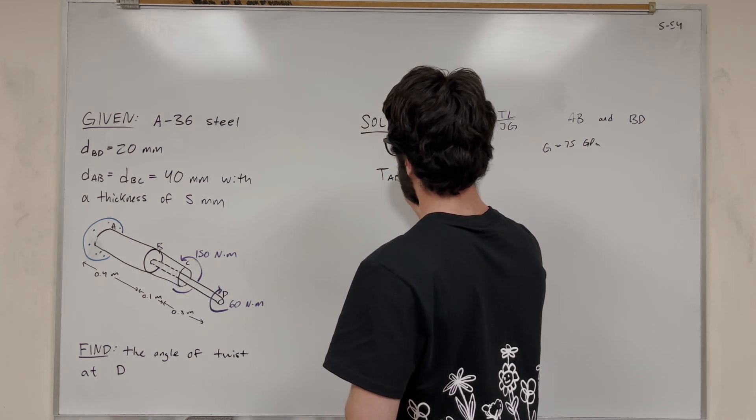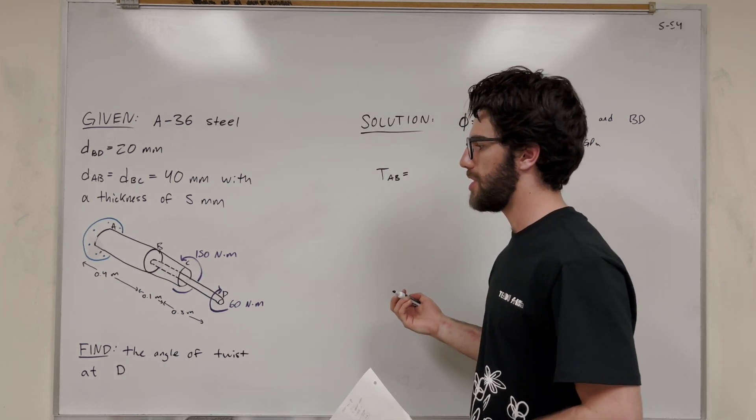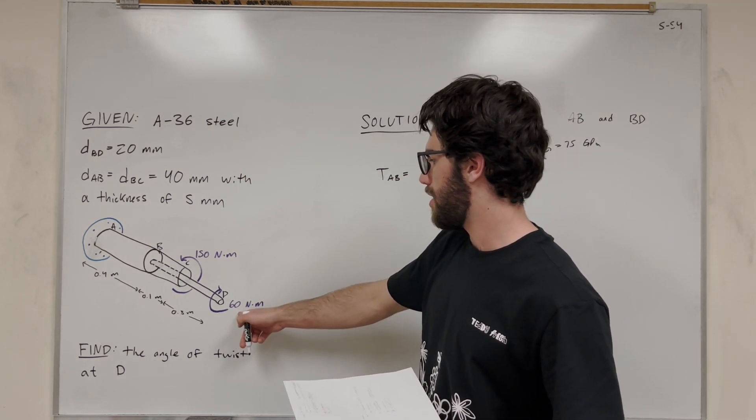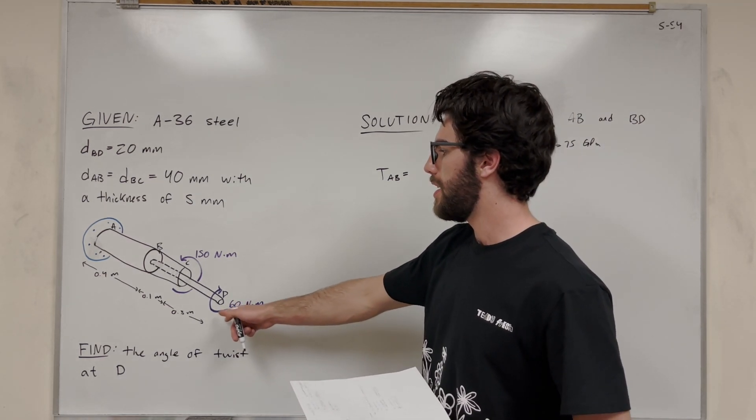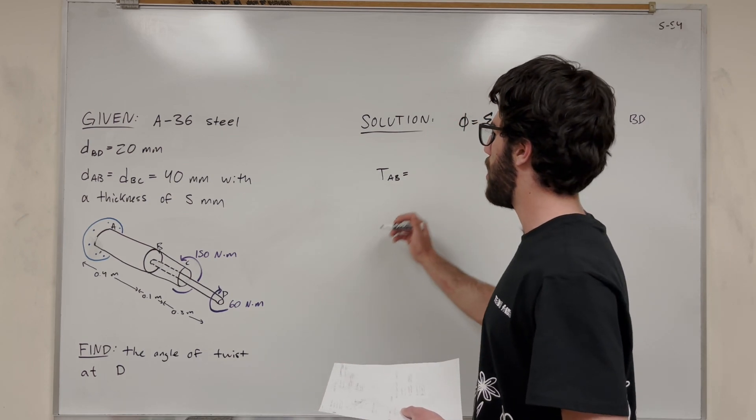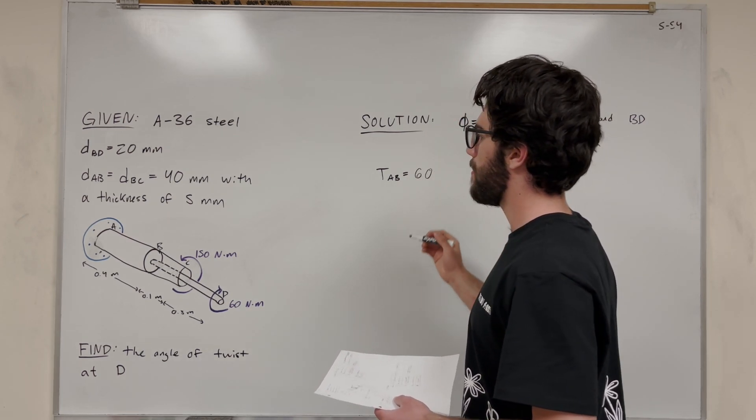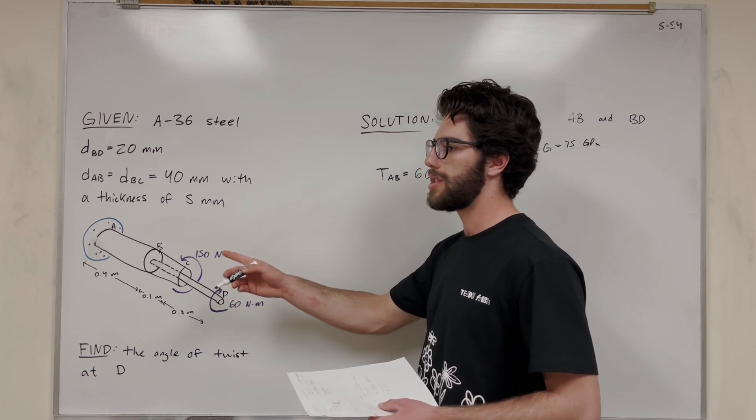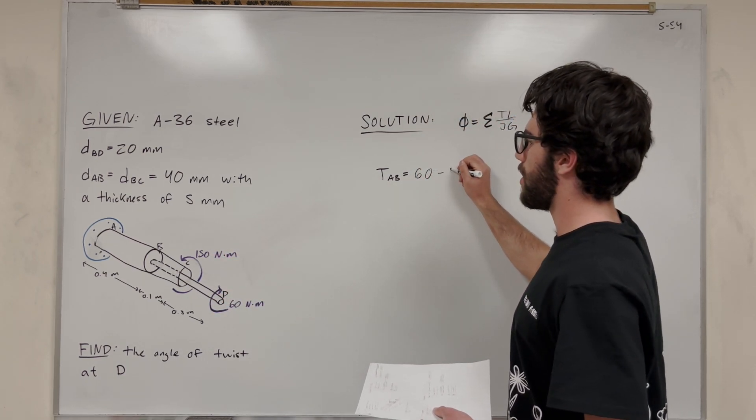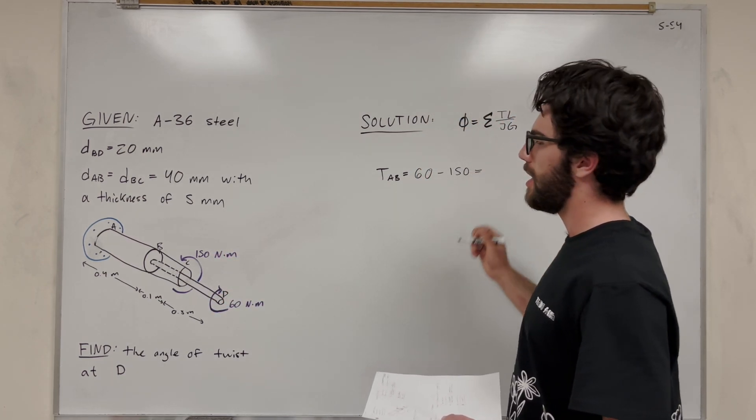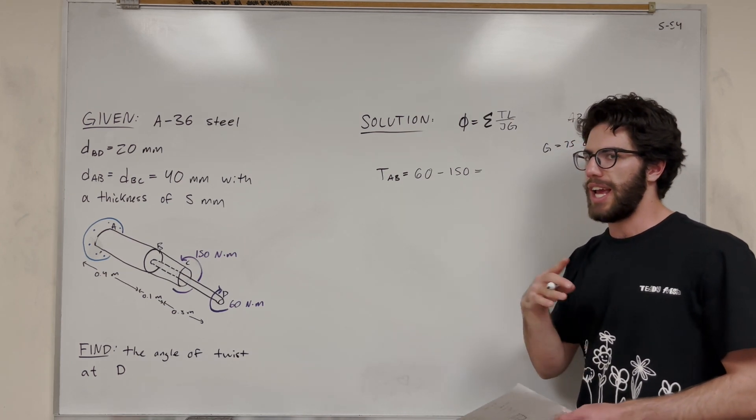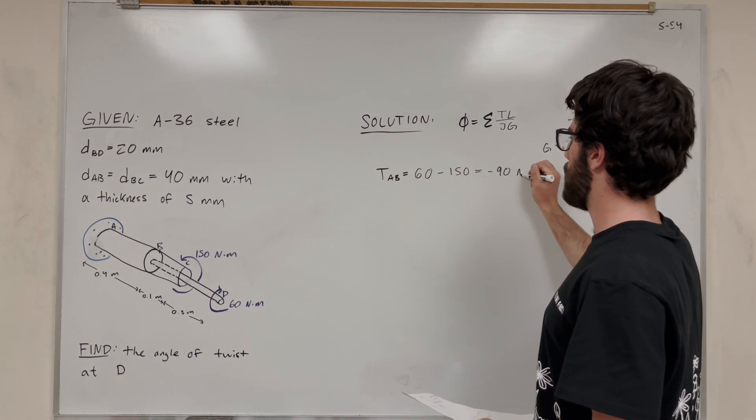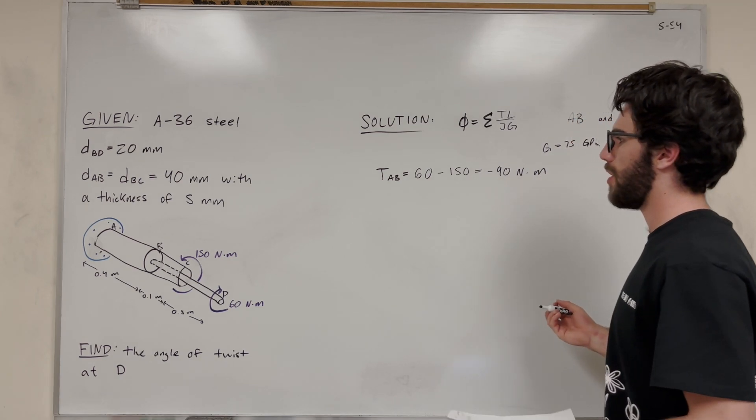So to do that, we need to add these torques together. So torque AB, it's going to be basically the sum of these torques. This 60 newton-meter force is going counterclockwise, so let's make that positive. So we're going to add 60, and then we also have this 150 newton-meter force going clockwise. So that's going to be subtracted, because they're going opposite directions. It doesn't really matter which one you make positive or negative, but they have to both be going different directions. So for this, we're going to get negative 90 newton-meters for that torque in AB.